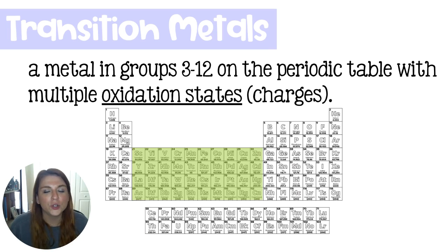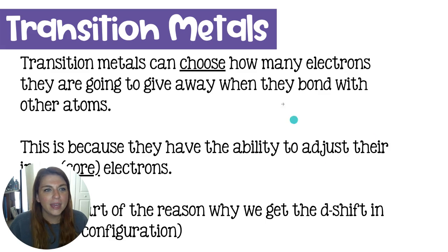Transition metals can be found in groups 3 through 12 on the periodic table, and what's special about them is that they have multiple oxidation states, which, remember, just means charges.